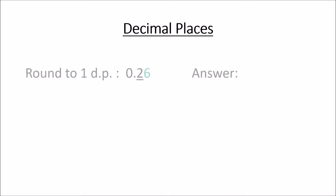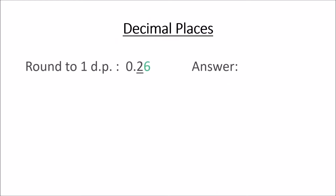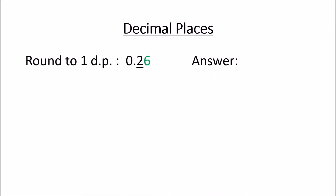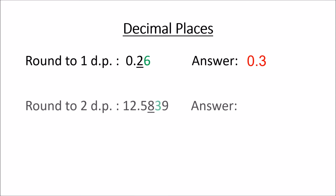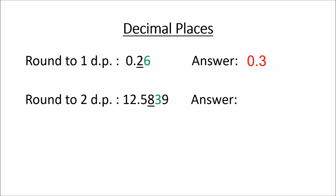Decimal places first. Round to one decimal place: 0.26. You underline the 2 because that's one digit after the decimal place. The 6 at the back — you look at it to see if you have to change the 2 or not. Since it's a 6, and once it's 5 or more, you add a 1 to it, so it becomes 0.3. Final answer.